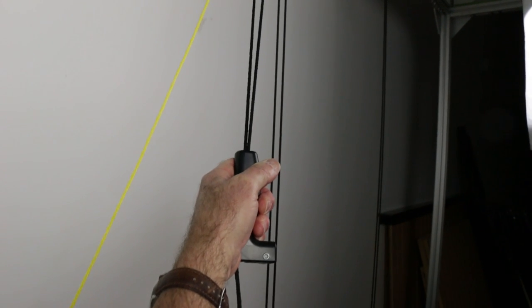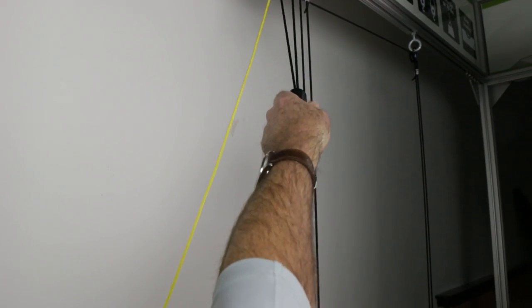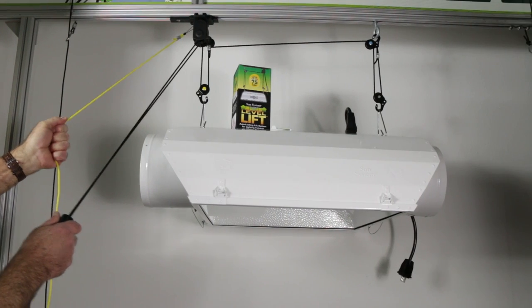To operate the LevelLift, use the line handle to pull evenly on the control line. Slide the line handle higher along the control line before each pull.